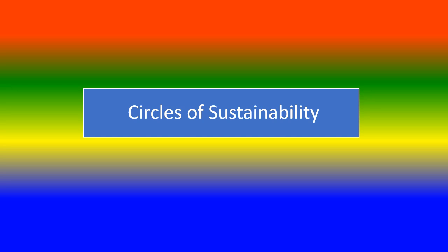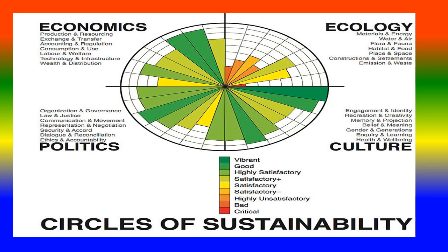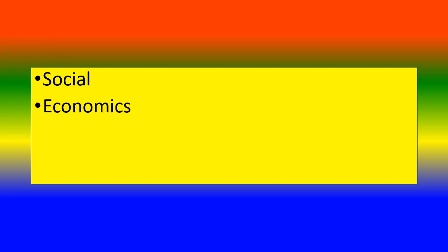Circles of sustainability. This model concerns ecology, culture, politics, and economics, which should be balanced for sustainability. Social aspects include familial, religious, educational, and occupational dimensions. Economics — production, distribution, and consumption — should be sustainable. Environmental health should be concerned. Politics: the government formulates programs and policies to promote sustainable development.